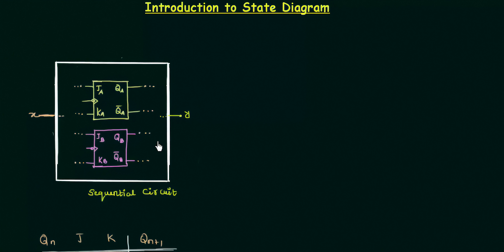Now the first thing is the state table. In sequential circuits we use state tables instead of truth tables. You remember in combinational circuits we use the truth table to get information about the circuit and by knowing it we know how the connection is there and what types of gates are involved. Similarly, by using the state table we can know the connection of a sequential circuit — how inputs and outputs are connected and how flip flops are connected also.